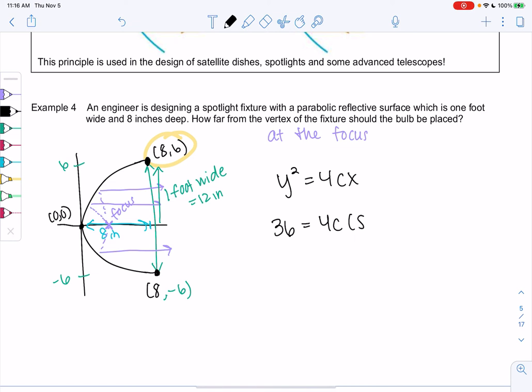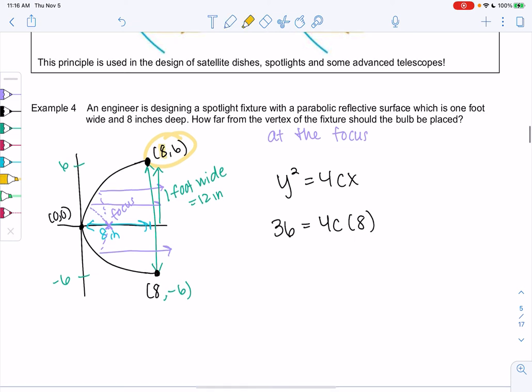So y² would be 6². 4c times 8. Just plugging 8 and 6 in for y and x. So let's see. We get 36 = 32c. And then we'll divide both sides by 32 to solve for c.